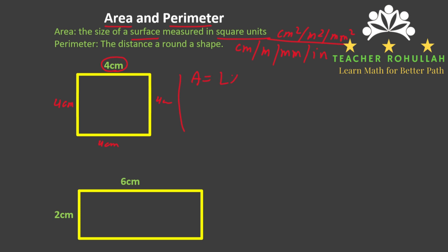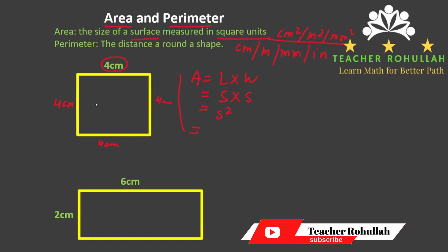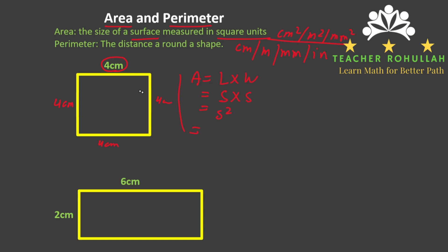The general formula is A equals L times W, where L is the length and W is the width. But in the case of a square, we name the side S, so the formula becomes S times S, which can be written as S squared. We now put the value of S — which is four centimeters — into the formula.